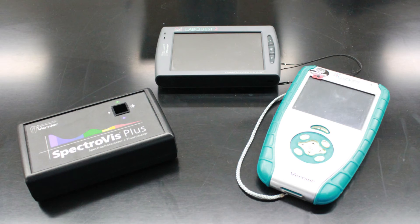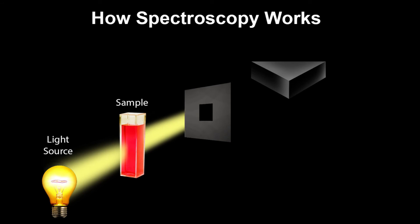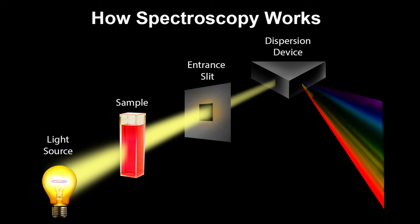In the undergraduate lab, we use the Spectroviz to take spectroscopy readings for us. Here is how this device works. We start off with the light source. The light source is directed through our sample into an entrance slit. Once the light passes through the slit, it is sent to a dispersion device that spreads out the light in a spectrum to be analyzed by a sensor.